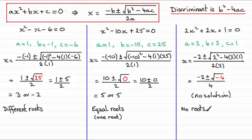So hopefully you can start to see that the number of roots is determined by the discriminant. We get different roots when we square root a number greater than 0. We get exactly one root when we square root 0. And no roots when we square root a negative number.